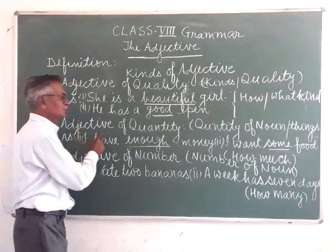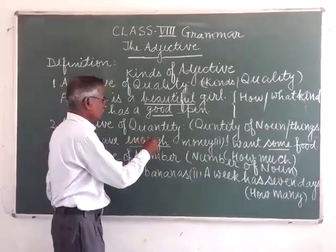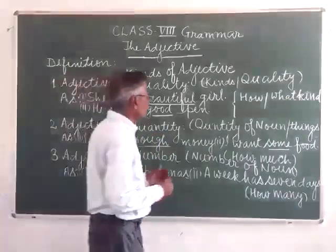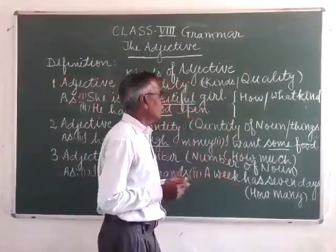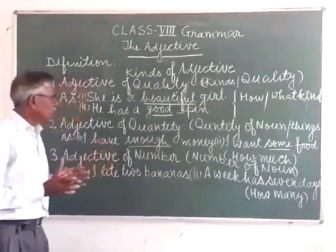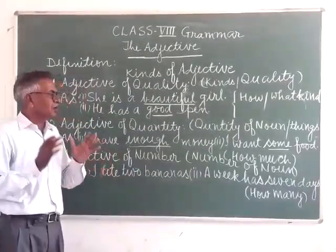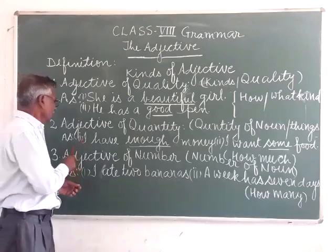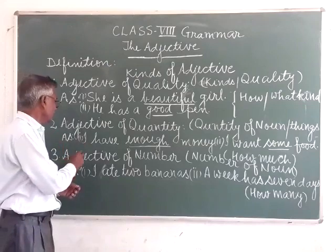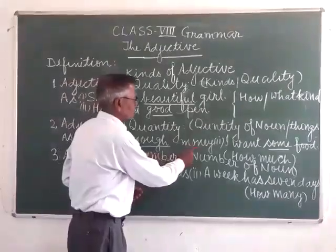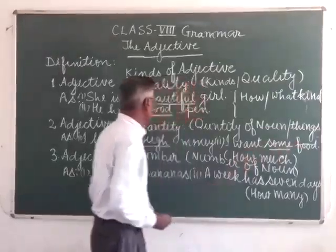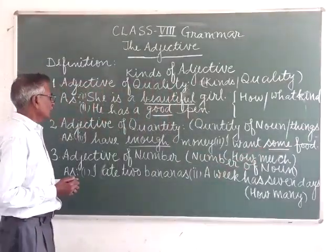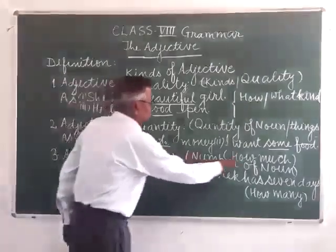Now we come to the second kind of adjective, that is the adjective of quantity. The adjective of quantity shows the quantity of a noun or things. For example: 'I have enough money' and 'I want some food.' Here the words enough and some are adjectives of quantity.